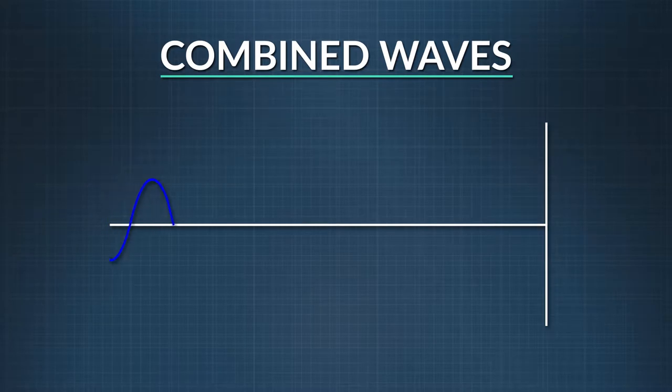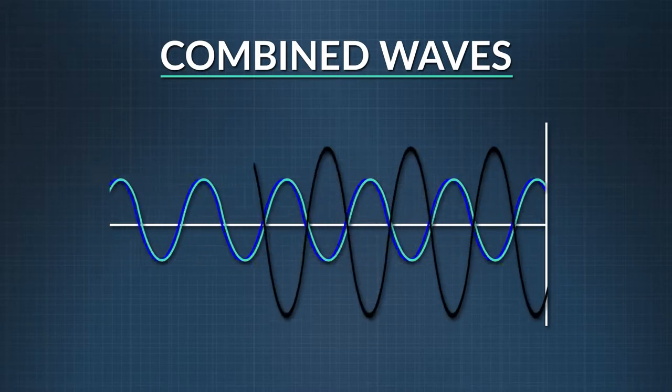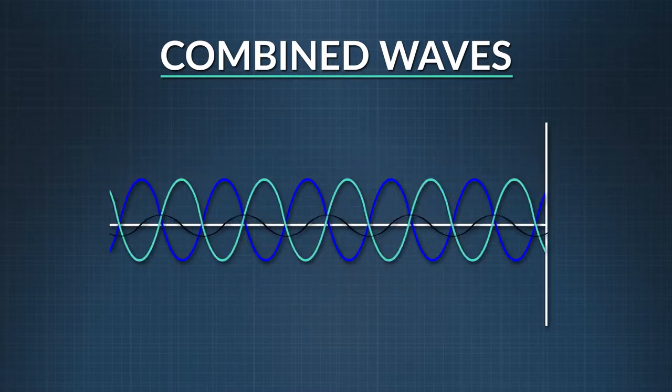In this example, the blue wave is the incident wave, moving to the right. And the green wave, the reflective wave, is moving to the left. The black wave is their sum, or the resultant wave, also known as the standing wave.